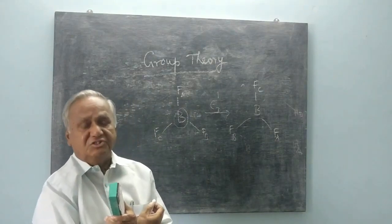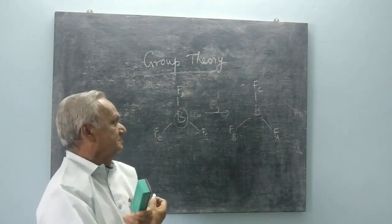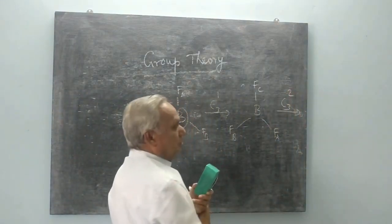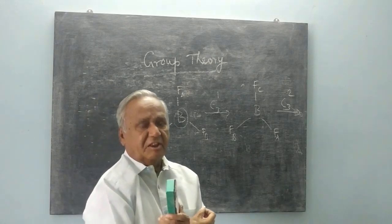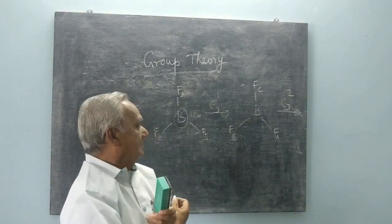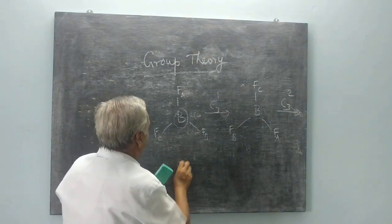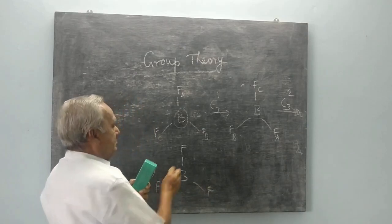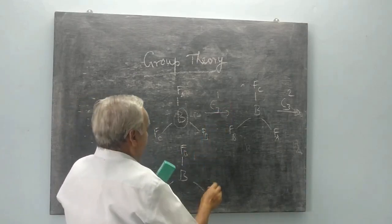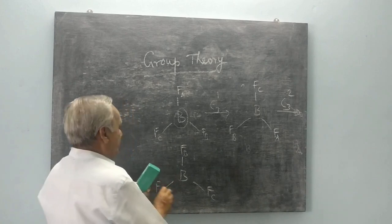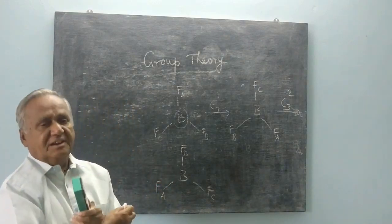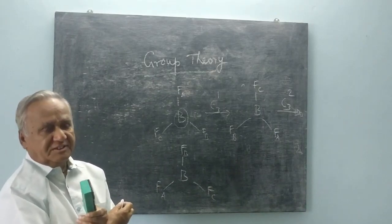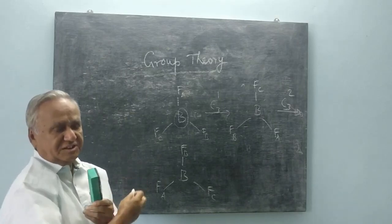This structure is an indistinguishable structure. I can rotate again — this is C3-2, a 240-degree rotation. What I get is B will go over here, C will come over here, and A will come over here. It is again an indistinguishable structure, corresponding to a 240-degree rotation from the starting structure.